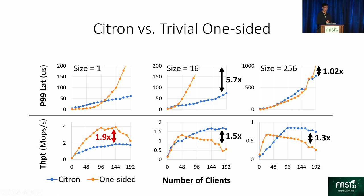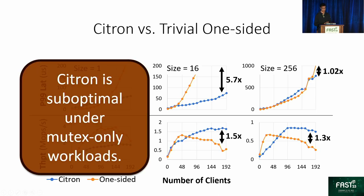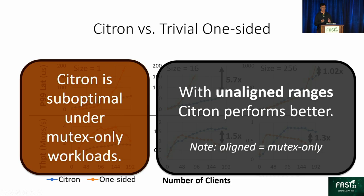As for the trivial one-sided RDMA-based baseline that assigns a mutex to each storage unit, Citron performs worse when the range size is 1, meaning the workload is mutex-only. It is reasonable that Citron, as a range-lock manager, performs worse than a dedicated mutex manager. However, when the range size is larger and there are unaligned ranges, the baseline causes false-lock conflicts and unnecessary waits, resulting in suboptimal throughput and latency compared to Citron.